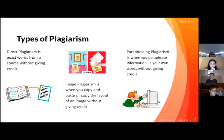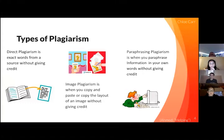Types of plagiarism. Direct plagiarism is exact words from a source without giving credit. Image plagiarism is when you copy and paste or copy the layout of an image without giving credit. Paraphrasing plagiarism is when you paraphrase information in your own words without giving credit.